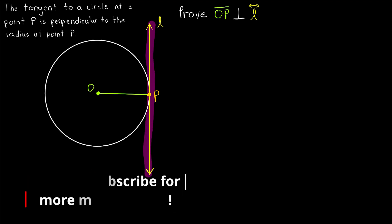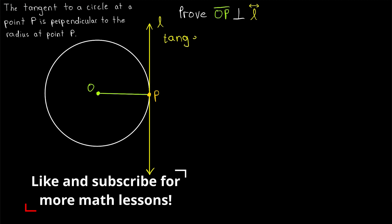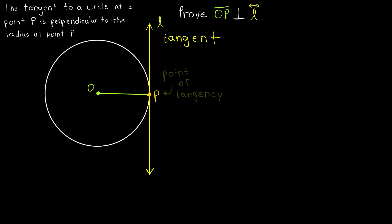A line that intersects a circle in just one point is called a tangent, and the point where the tangent intersects the circle is often called the point of tangency.